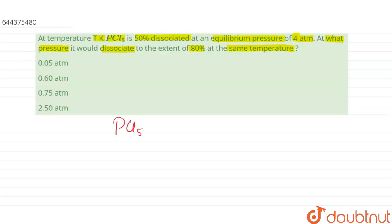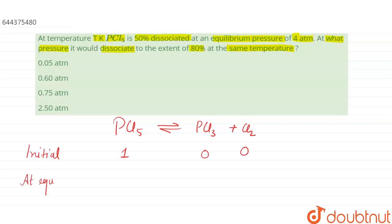PCl5 dissociates into PCl3 plus Cl2. Initially, the number of moles of PCl5 is 1, and of PCl3 and Cl2 will be 0. At equilibrium, it is said to be 50 percent dissociated. If x is the degree of dissociation, we have (1 - x) for PCl5, and x for each of PCl3 and Cl2.